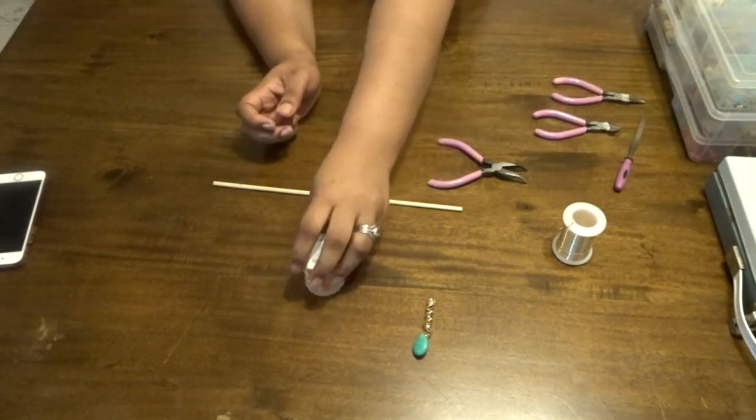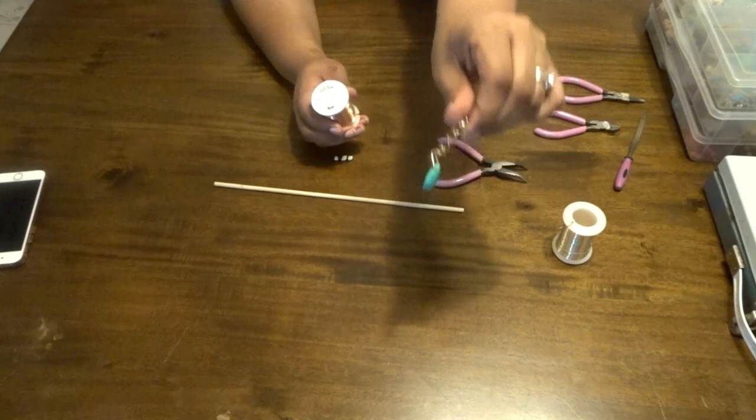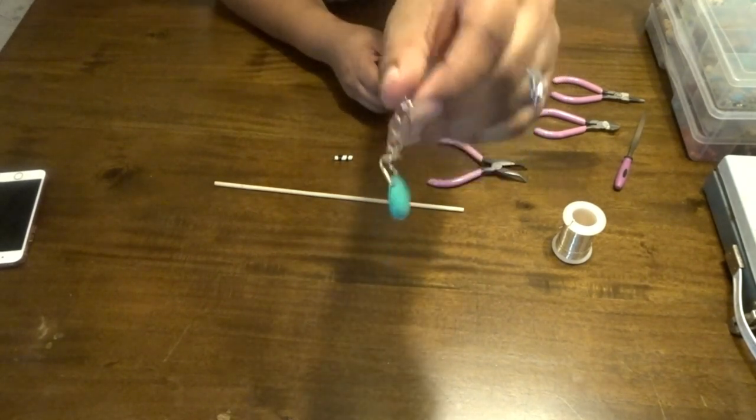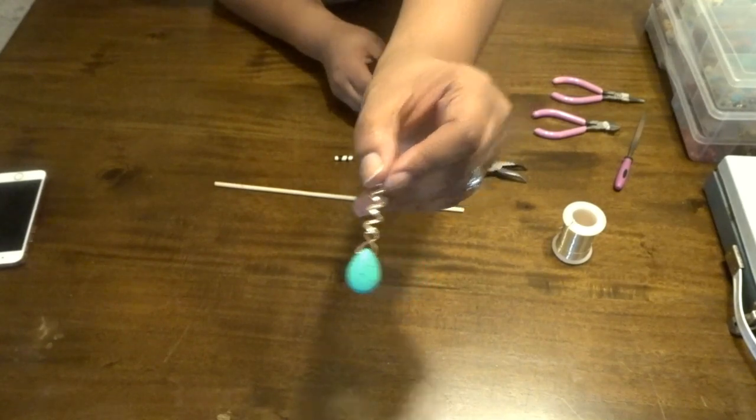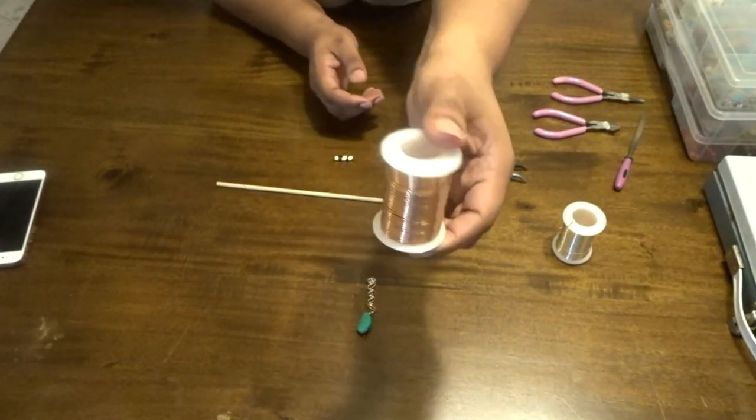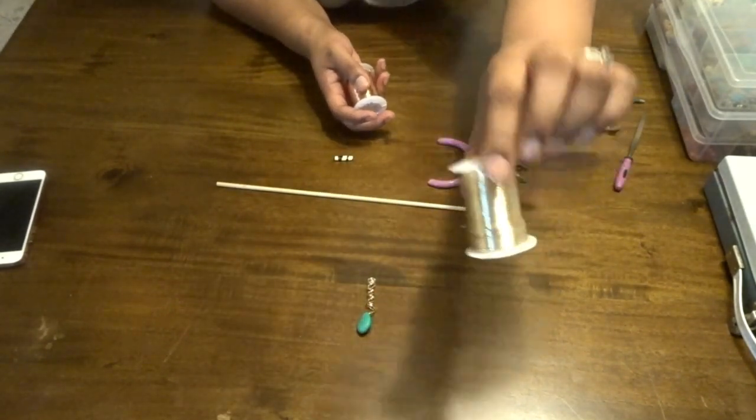So this one is copper wire. I always use 100% copper wire. This one is coated in gold and this one is the raw copper color. So since I already did the gold toned one, I'm going to do the regular copper color.